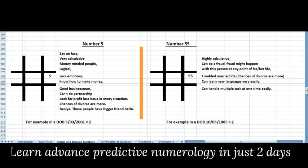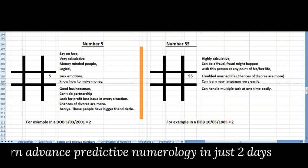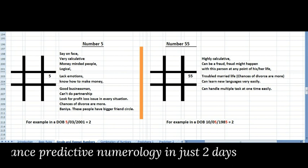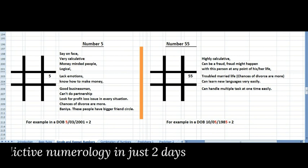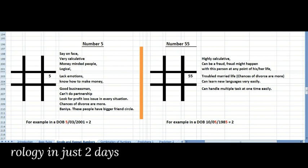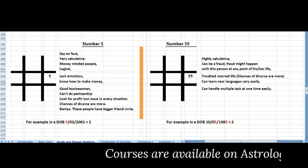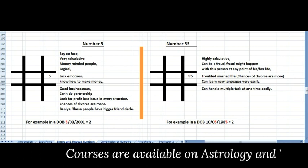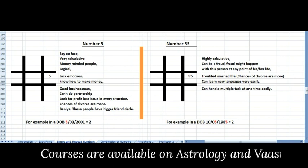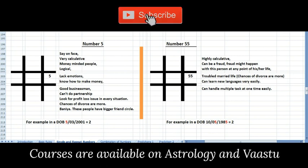At any point of their life, their marriage life is very troubled in double 5 also. However, it becomes easier for them to grasp any new language. They can handle multiple tasks at one time because of their intelligence and highly calculated mind.